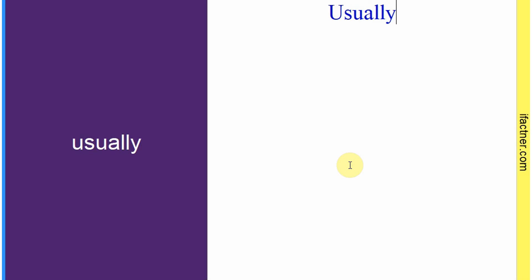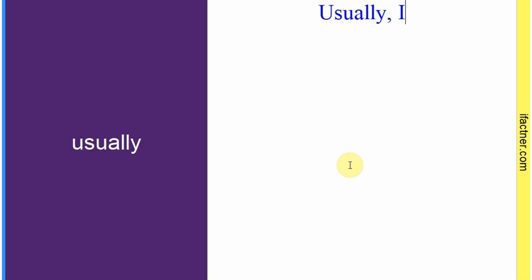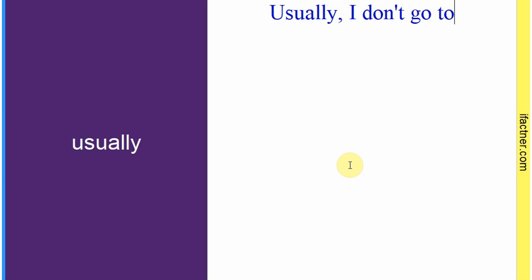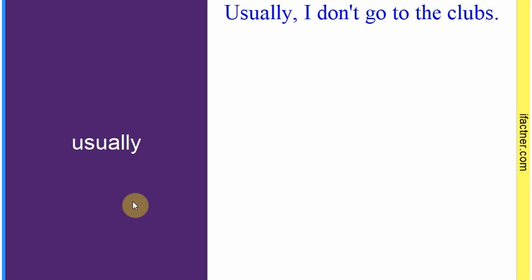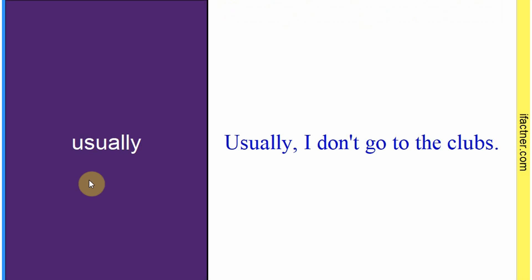Word hai: 'usually'. Sentence: 'Usually, I don't go to the clubs.' Aam taur par mein clubs nahin jaata. Toh 'usually' hota hai 'aam taur par'. Sentence banaaya: 'Usually, I don't go to the clubs.'